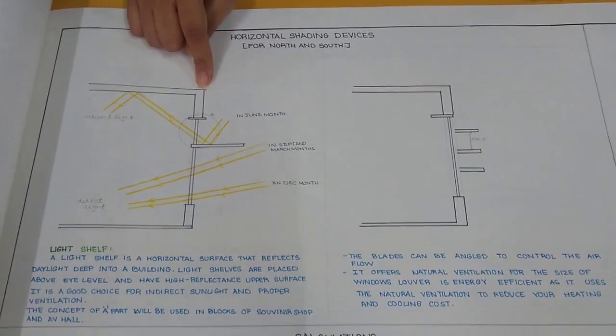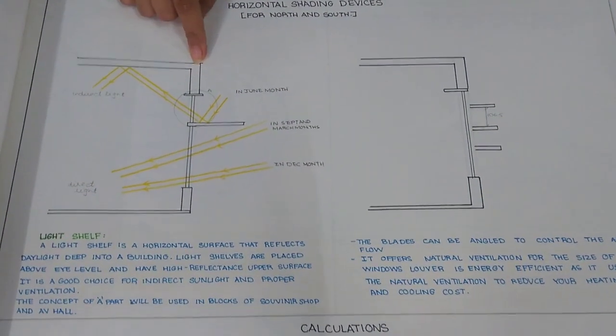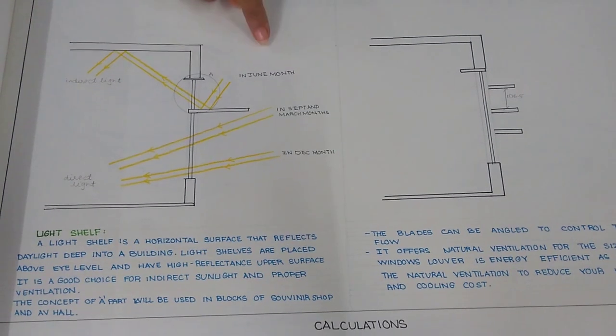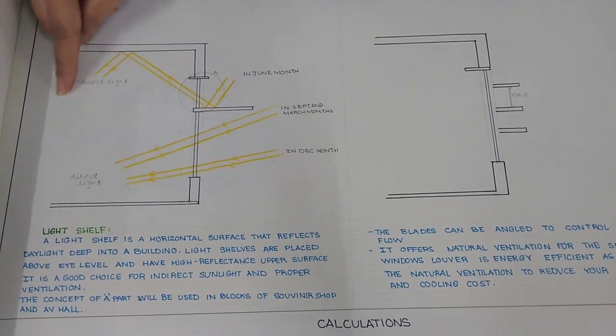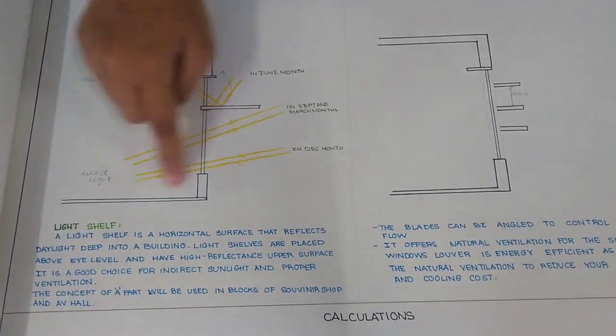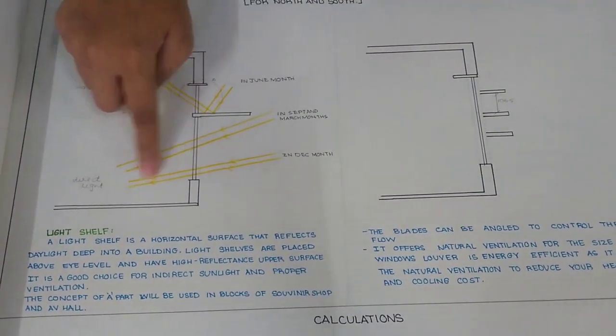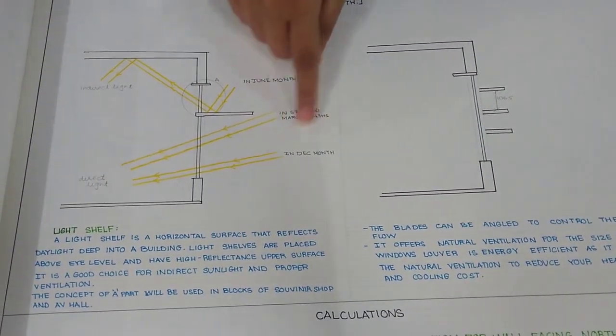This is a light shelf which I have used for the lowest most windows where the light gets reflected and indirect light comes in. Here you can see that in this part, direct light comes in the month of March and December.